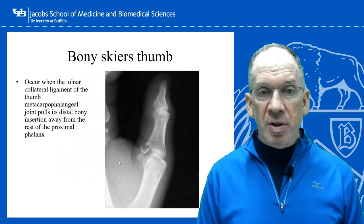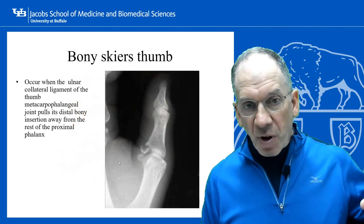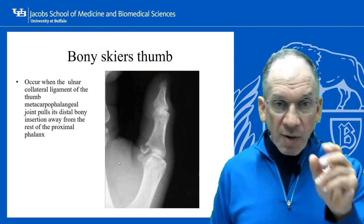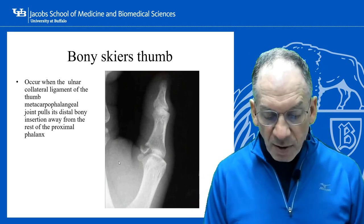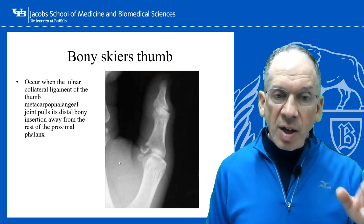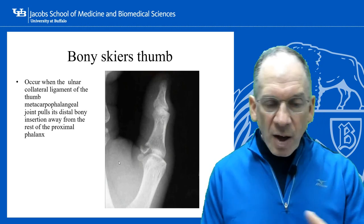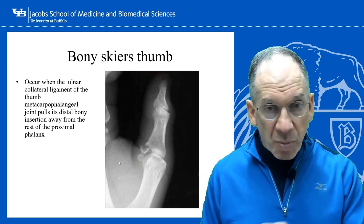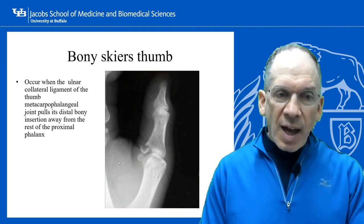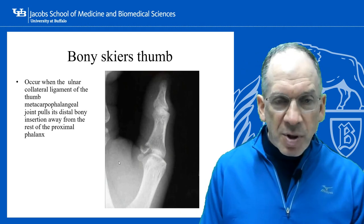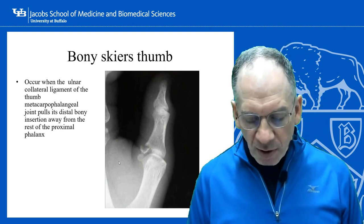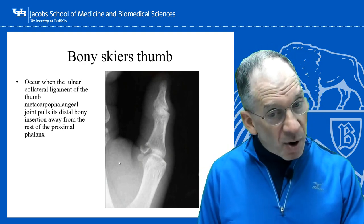Skier's thumb is typically caused by a fall with the thumb abducted, tearing the ulnar collateral ligament or avulsing a piece of bone attached to it. The term gamekeeper's thumb also gets used: skier's thumb is an acute injury, whereas gamekeeper's thumb is an attenuation of the ligament over time — from chronically twisting the necks of game animals — leading to chronic laxity. Both result in a lax or dysfunctional ulnar collateral ligament.